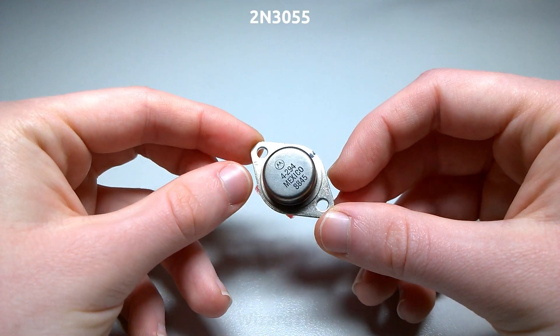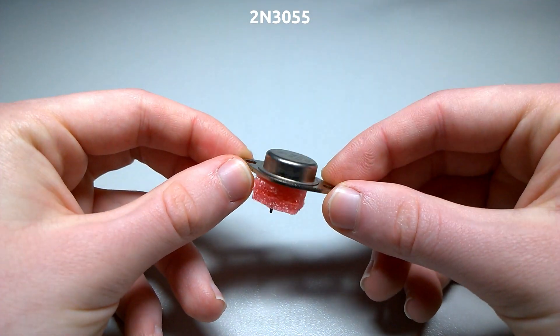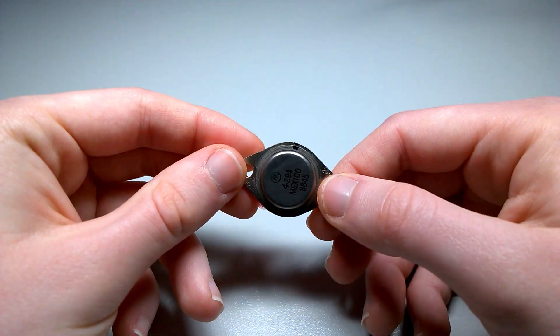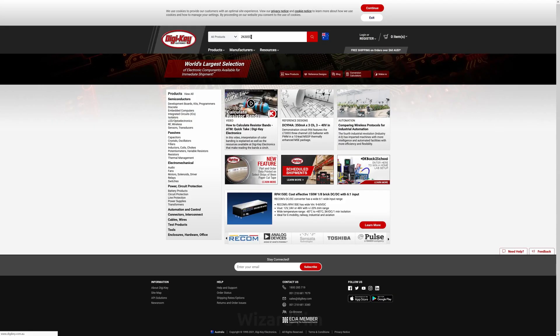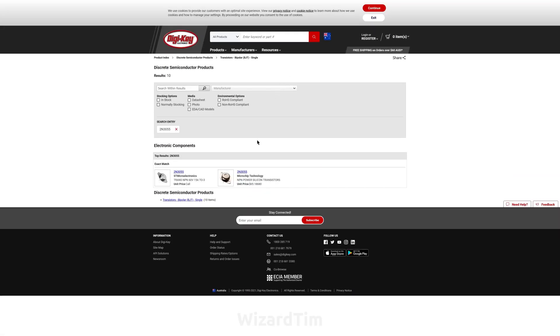I've heard that the 2N3055 is a rather common TO3 transistor, so searching it up on DigiKey, we find a few results. Here we have one, unit price call and unit price $65, no thank you.